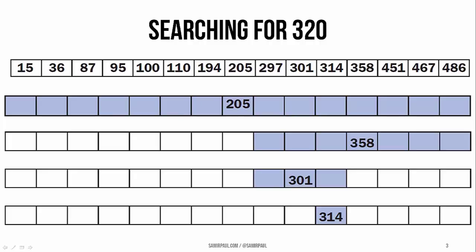That's after only four steps. If the search value had happened to be 205, 358, 301, or 314, we'd have actually found it in four or fewer steps. In fact, binary search is guaranteed to search a list of 15 sorted elements in at most four steps.